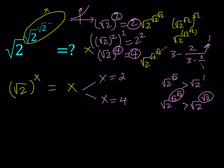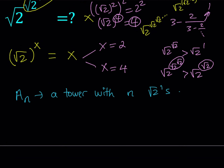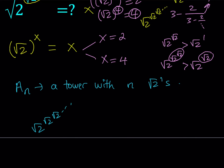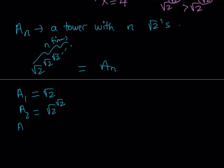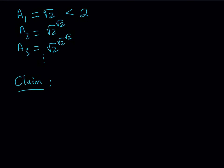I'm going to define this as a sequence. Let aₙ be a tower of n square root of 2s — so square root of 2 to the power square root of 2 to the power square root of 2, repeated n times. For example, a₁ is just square root of 2; a₂ is square root of 2 to the power square root of 2; a₃ is square root of 2 to the power square root of 2 to the power square root of 2. My claim is that aₙ is less than 2 for all n.